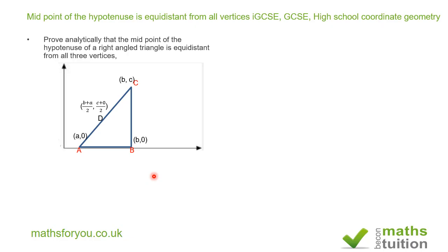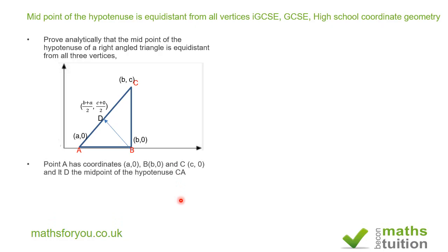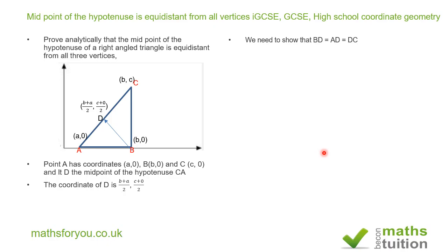If I now join B to D, that gives me the distance from vertex B to point D. All we need to do is show that BD is equal to either CD or AD, because CD is equal to AD anyway. To formalize that: we are required to show that BD = AD = CD.